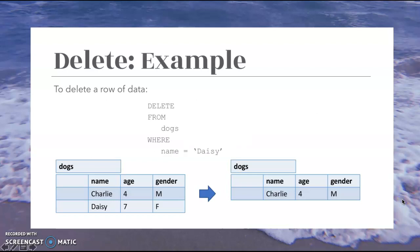So our example for the delete keyword is, as you can see here, in order to delete a row of data, we'll say delete from dogs, the table, where name equals Daisy. So we're specifying that this is the row we want to be deleted. And as you can see here, this will be the result. And it just removes that row of data.